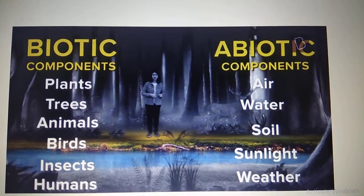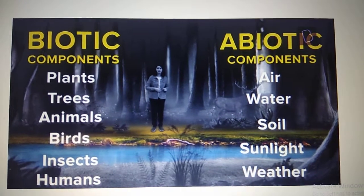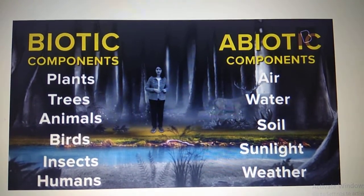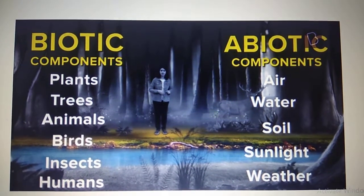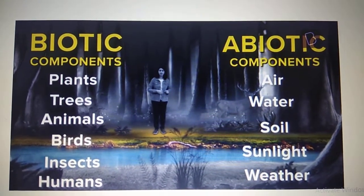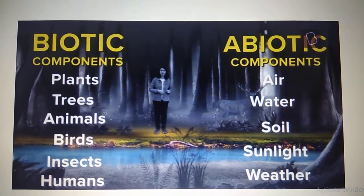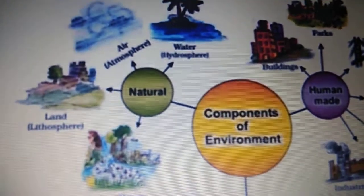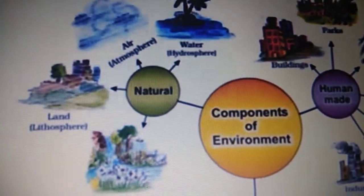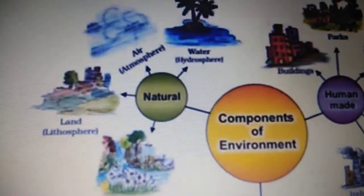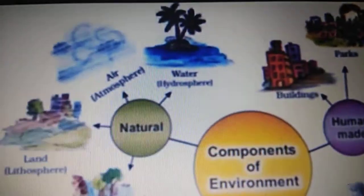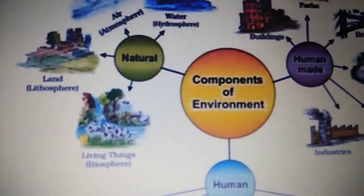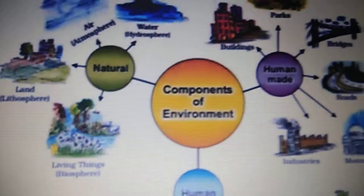Environment consists of both living and non-living. Biotic is living and abiotic is non-living components. Children, we have learnt about the natural environment components. We can see here water, air, land, and living things which form the biosphere.